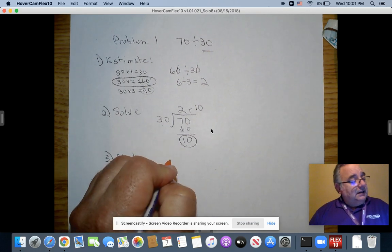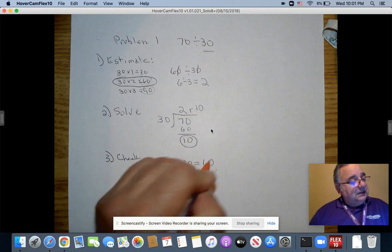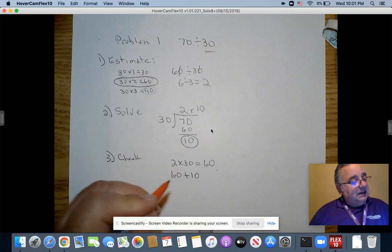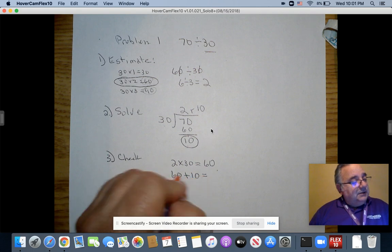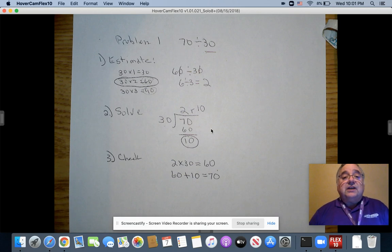But how do I know if that's right? Well, I take 2 times 30 gives me 60. Then I take 60 plus 10, and that gives me 70. So that gives me 70.